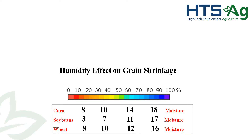Let's take a look at what the effect of humidity is on grain shrinkage and drying. If we want 14 to 15% corn and we look at what that equals out to, we're in that 65 to 70% humidity range — that's the perfect quality of air to put through that grain.